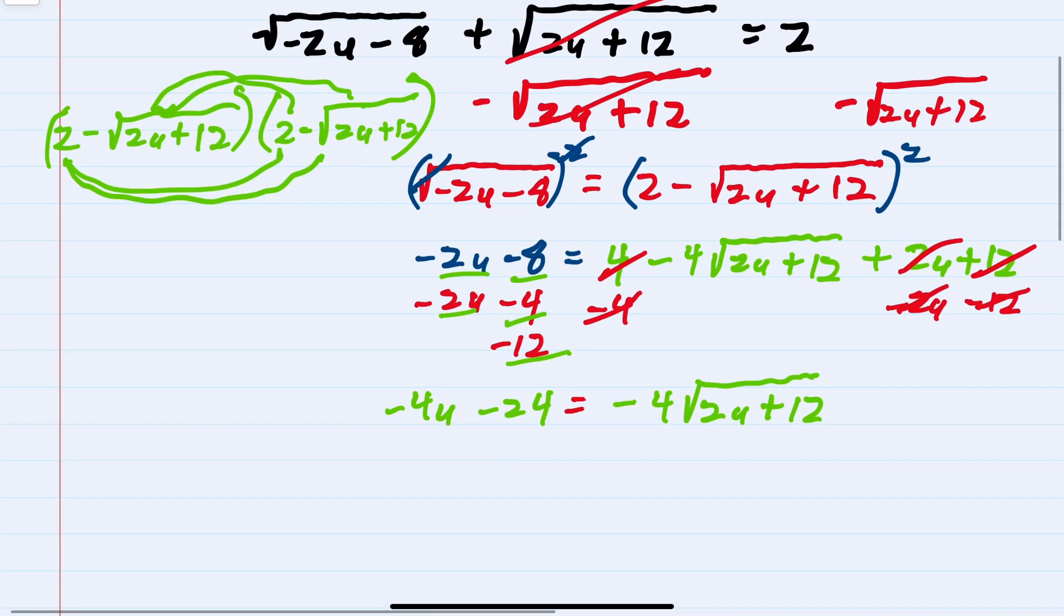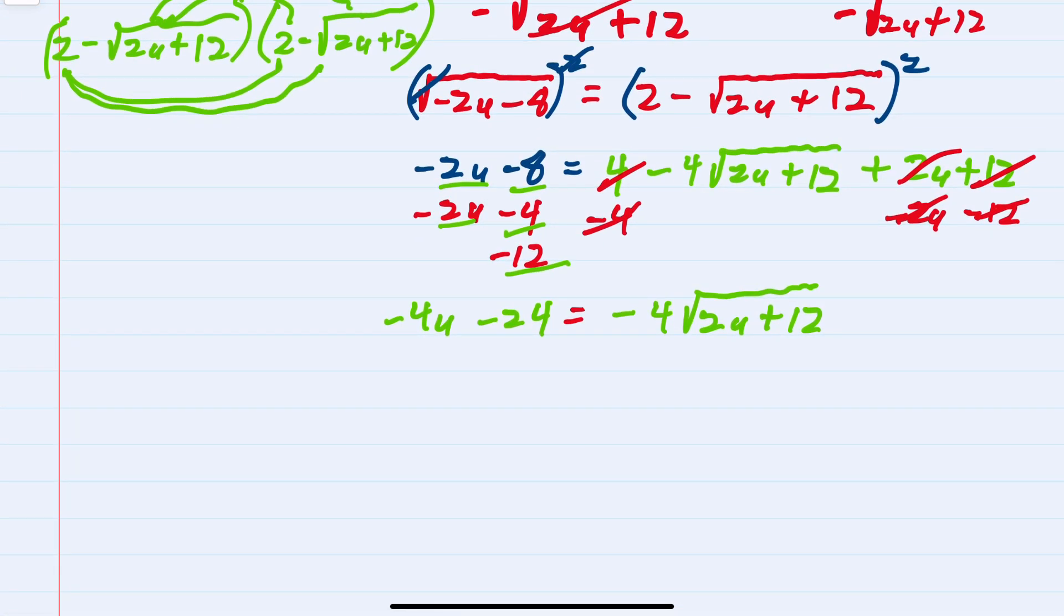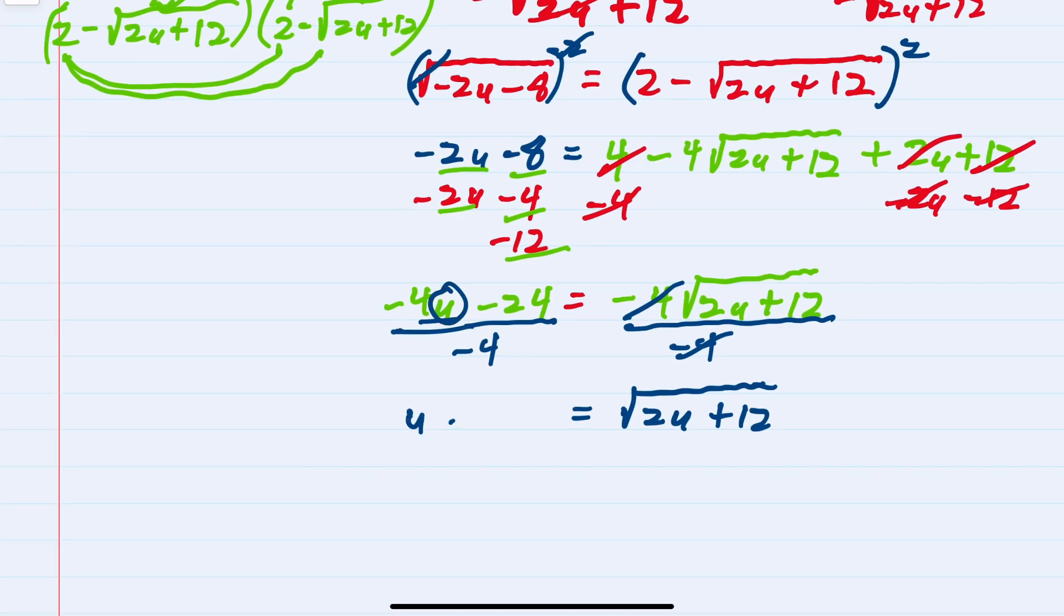To continue solving and eliminate the radical, I'll divide both sides by -4. Every term on the left side needs to be divided by -4. On the right, those -4s cancel, giving me just √(2u+12). On the left, dividing each term by -4 gives me u from the first term and +6 from the second term, so u+6.